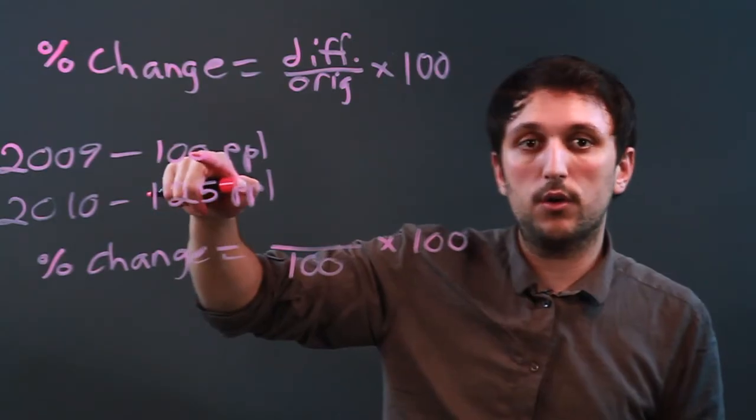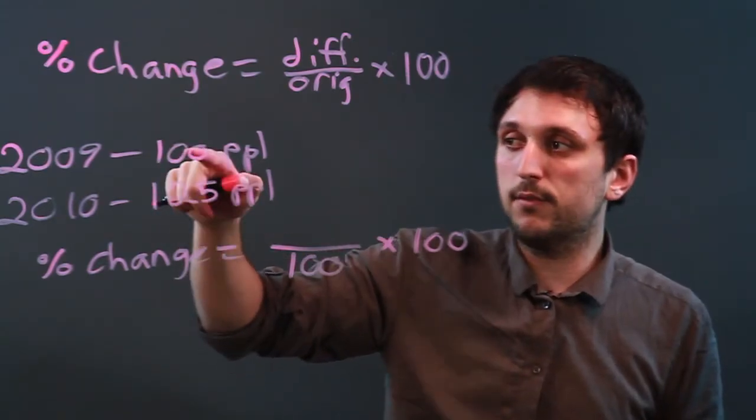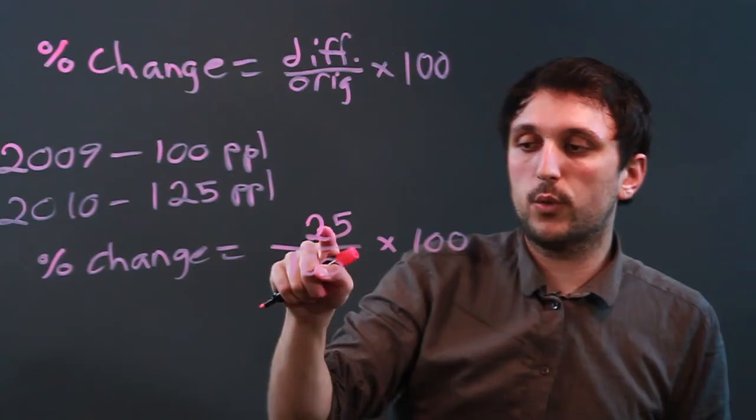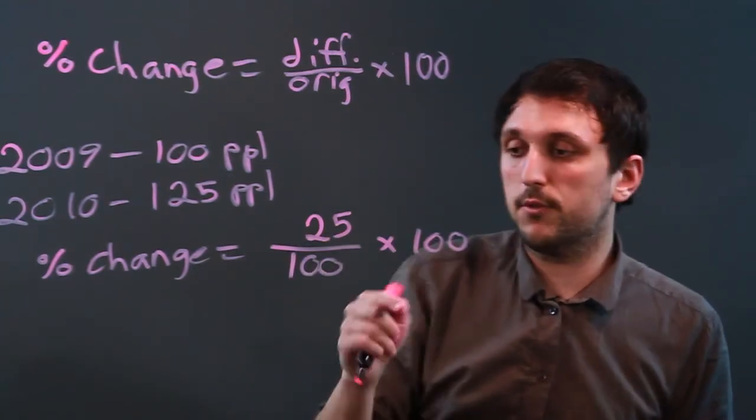The difference, we had 100. We have 125, so that's 25 more people. So it's 25 over 100 times 100.